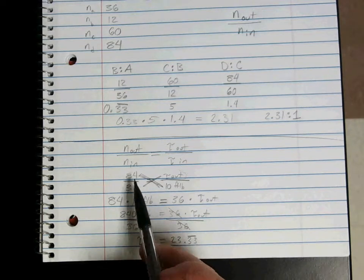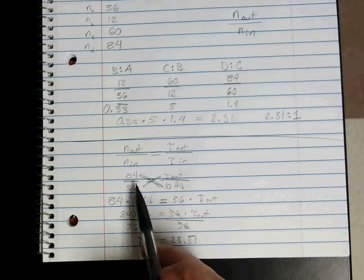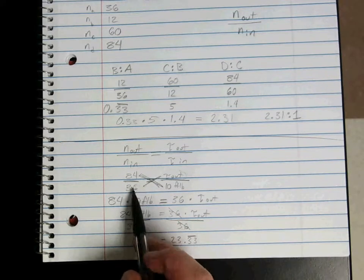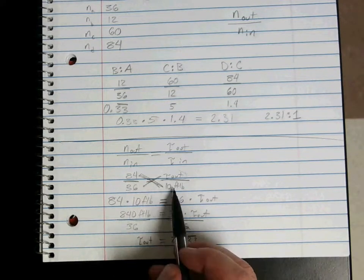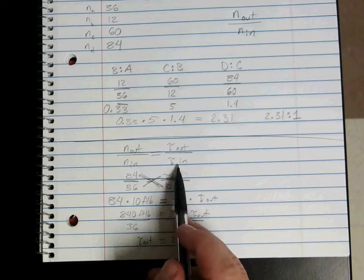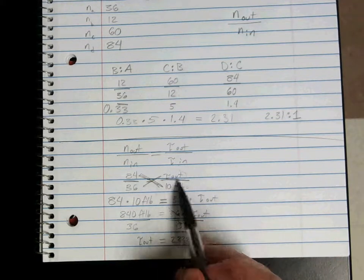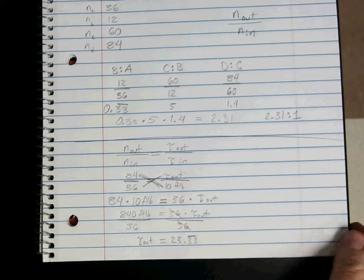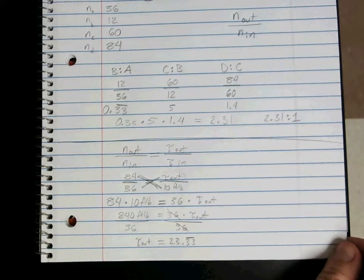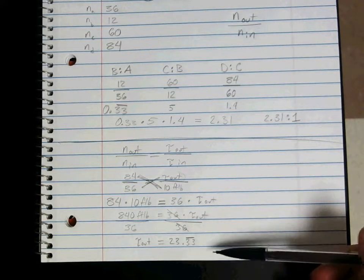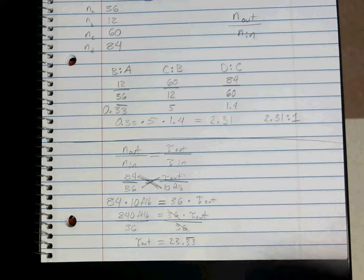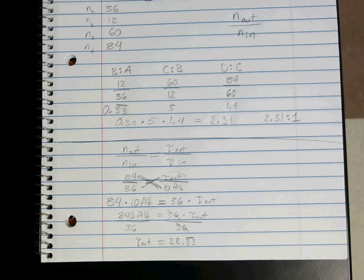No matter what your numbers are — maybe your largest gear is 60, maybe your smallest is 12 — plug in the values you have for your system, use 10 foot-pounds as your torque in, and solve for torque out. If you have questions, please let me know. You should be able to follow these same steps with whatever values you have.